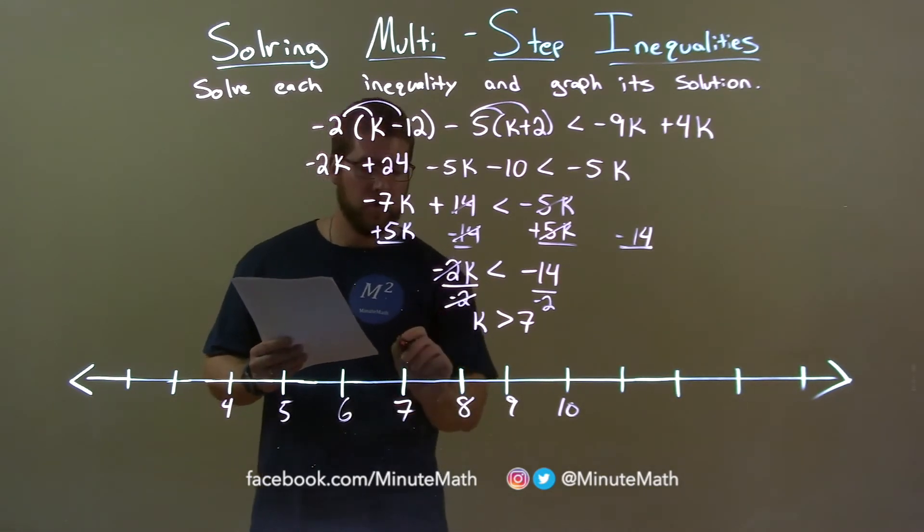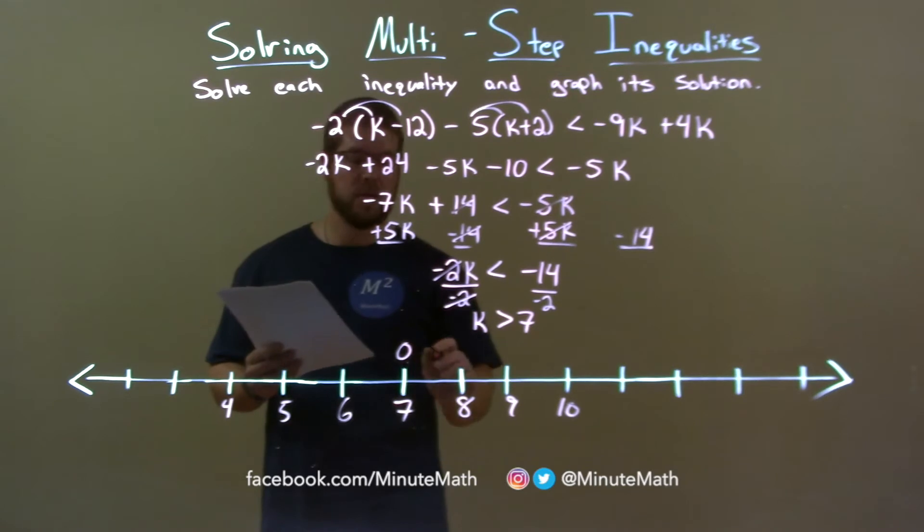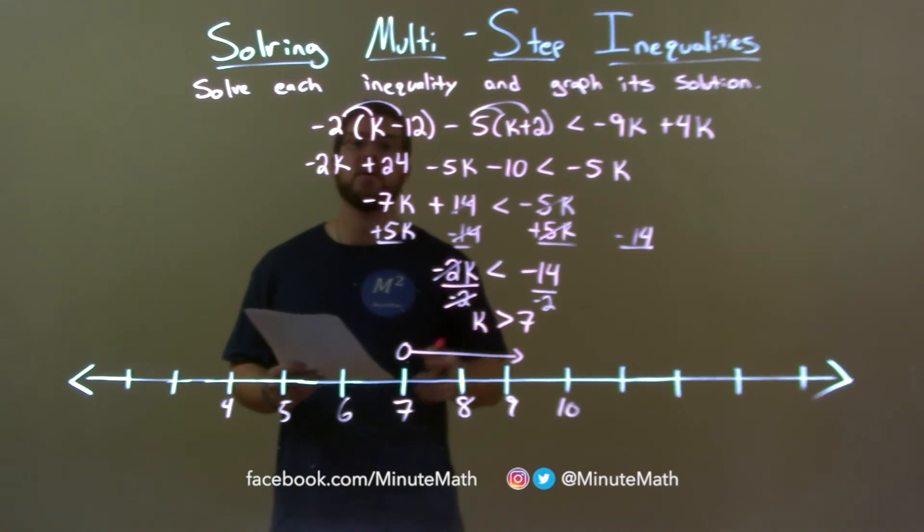Well, k is not equal to 7, so open circle there at 7. Then, k is greater than 7. Arrow to the right. And there we have it. Our graph matches our final answer. k is greater than 7.